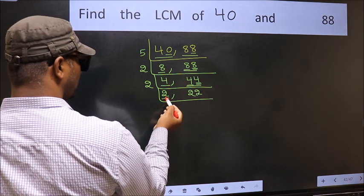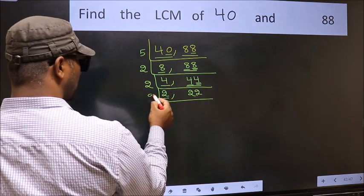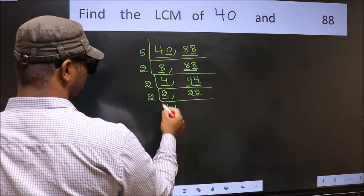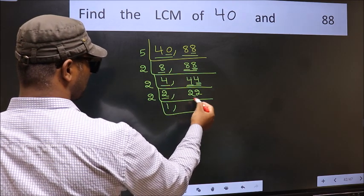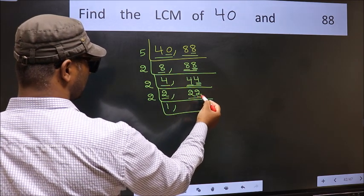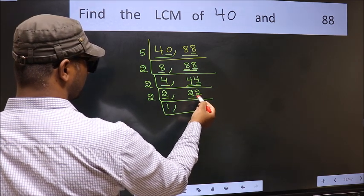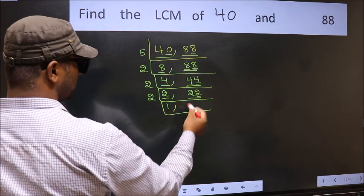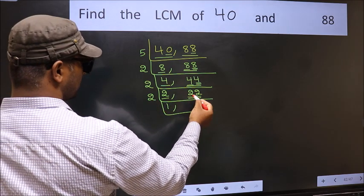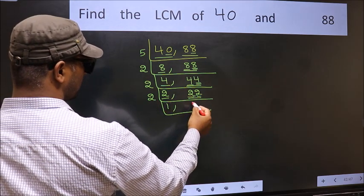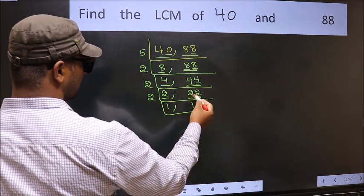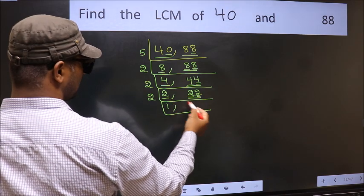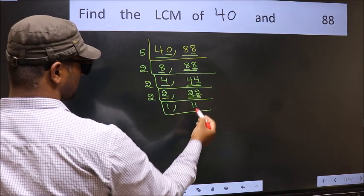Now here we have 2. 2 is a prime number, so 2 ones are 2. The other number is 22. Last digit 2 is even, so this is divisible by 2. When do we get 2 in the 2 table? 2 ones are 2. The other number 2: when do we get 2 in the 2 table? 2 ones are 2.